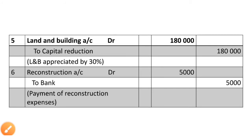Land and building is to be appreciated by 30%. The appreciation amount on Rs.6,00,000 is Rs.1,80,000. Journal entry: land and building account Dr., capital reduction account Cr. with Rs.1,80,000.